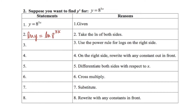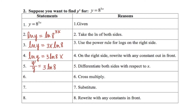In step three, we'll use the power rule for logs to bring that 3x down in front. In step four, we'll focus on the right-hand side and place all the constants out in front. In step five, we'll take the derivative of both sides with respect to x. In step six, we'll cross multiply. In step seven, we'll substitute, placing the originally stated function y equals 8 to the 3x in place of y. And in step eight, we'll rewrite with any constants out in front.